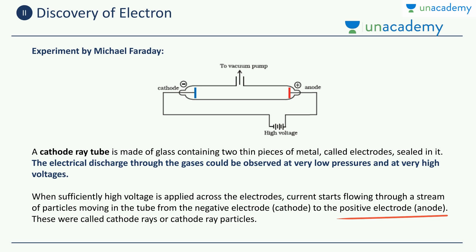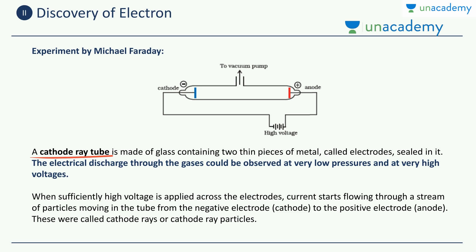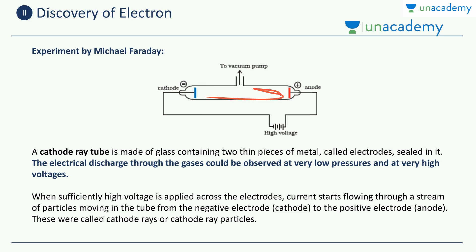There is an electrical discharge in this direction whenever we have high voltage and very low pressures. These were called the cathode rays or cathode ray particles. This tube is called a cathode ray tube because the particles originate from the cathode and move towards the anode. Hence these rays are known as cathode rays because of their source of origination, which is the cathode.